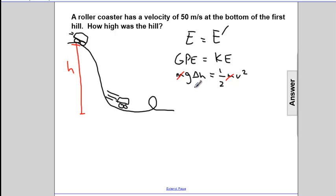So to solve this for delta H, I'll rewrite. G delta H is V squared divided by 2. We'll divide through by G. And we're home free.